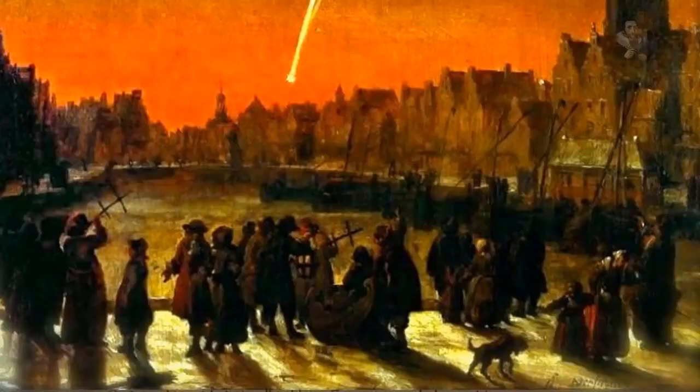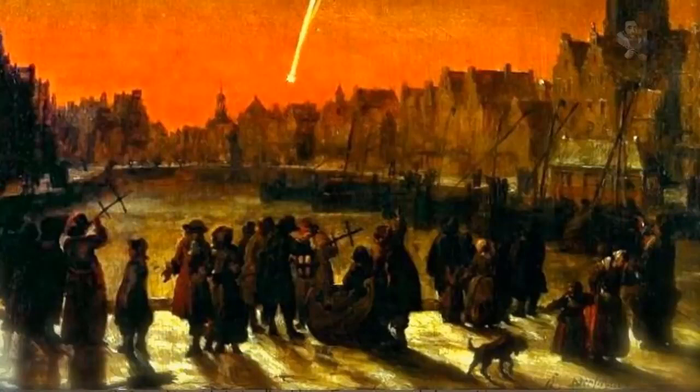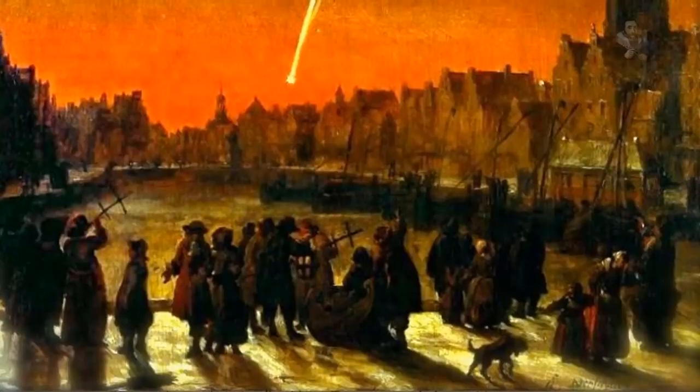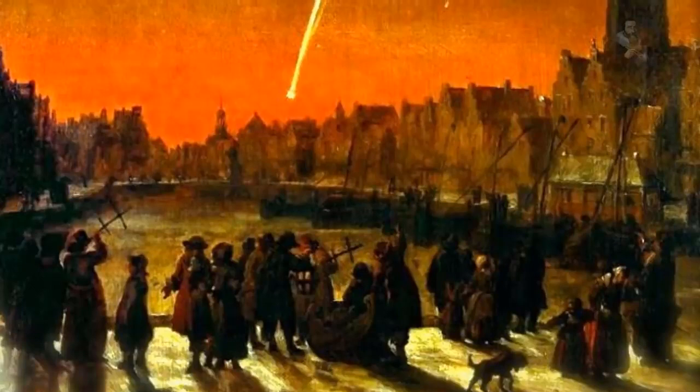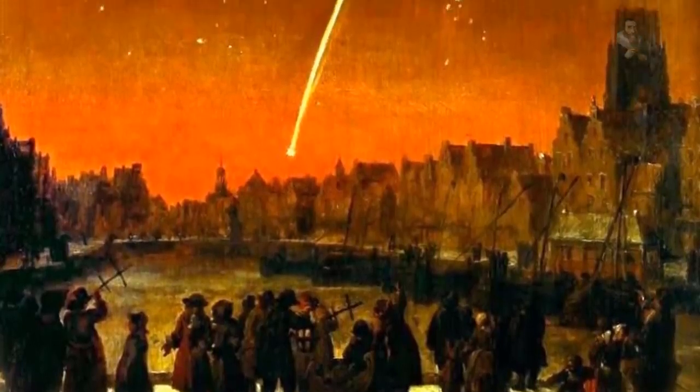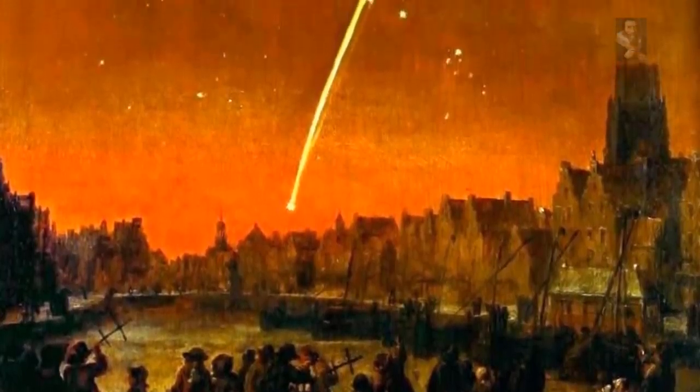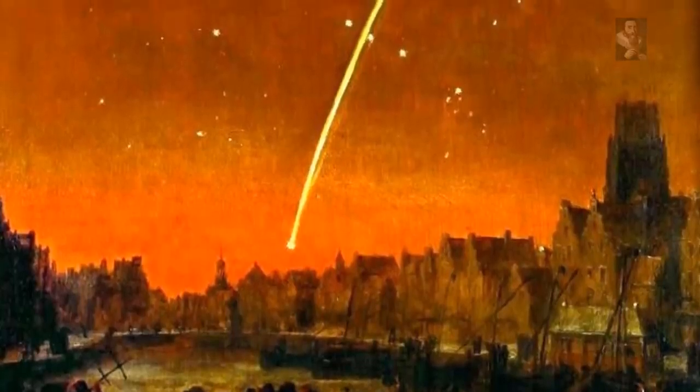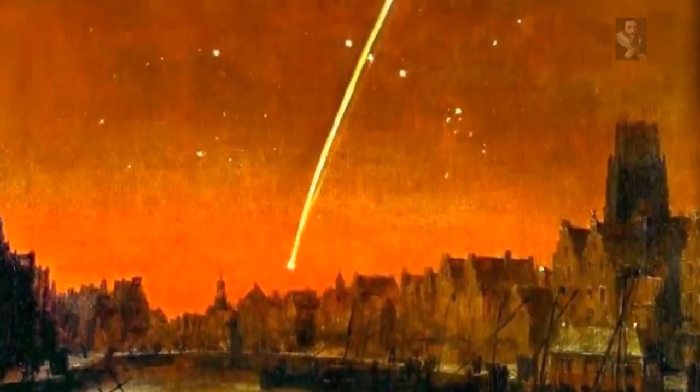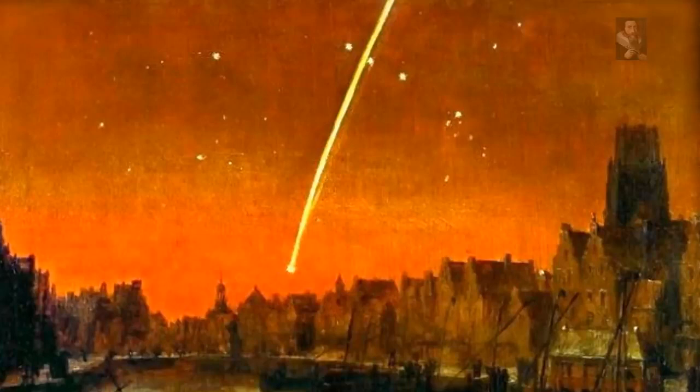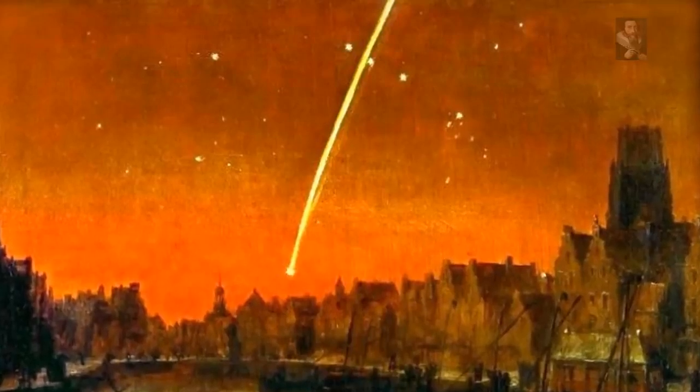Comet Lexell, named after the Swedish astronomer who discovered it, whizzed only a million miles from the Earth in 1770, missing us by a cosmic whisker. The comet had come streaking in from the outer solar system three years earlier, and passed close to Jupiter, which diverted it into a new orbit and straight toward Earth.